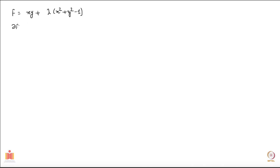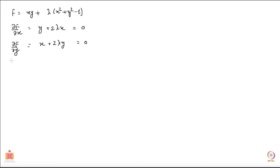We calculate the partial derivatives and set them to zero. The partial of F with respect to x gives y plus 2 lambda x equals 0. The partial with respect to y gives x plus 2 lambda y equals 0. And the partial with respect to lambda gives x squared plus y squared minus 1 equals 0, which is simply your original constraint equation recovered.